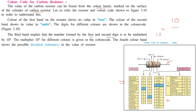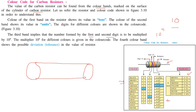The fourth colour band shows the possible deviation, which is the tolerance, in the value of the resistor. So we have: digit 1, digit 2, the multiplier, and the tolerance. For example, if the fourth band is red, the tolerance will be plus minus 2%. If the third band is yellow, it means multiply by 10 to the power 4.